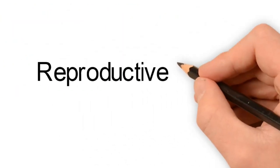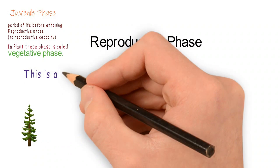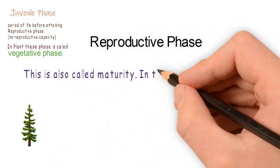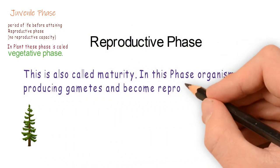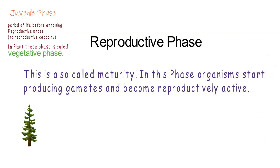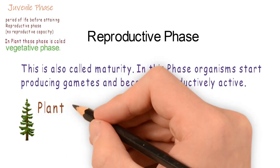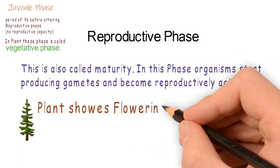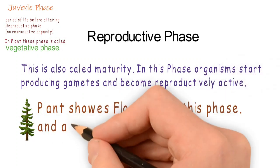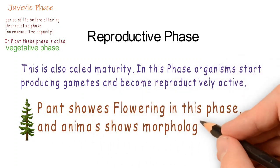After this phase, reproductive phase comes. In this phase, organisms become reproductively active and produce new offspring. Plants show flowering in this phase, and animals show some morphological changes, for example puberty.